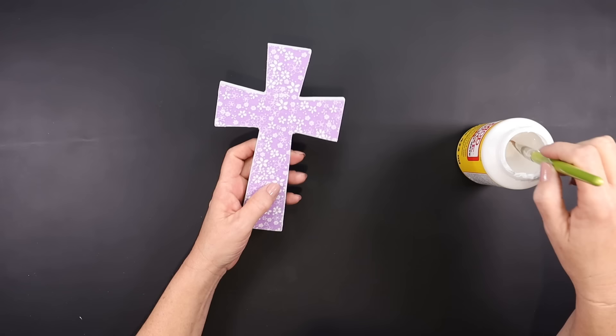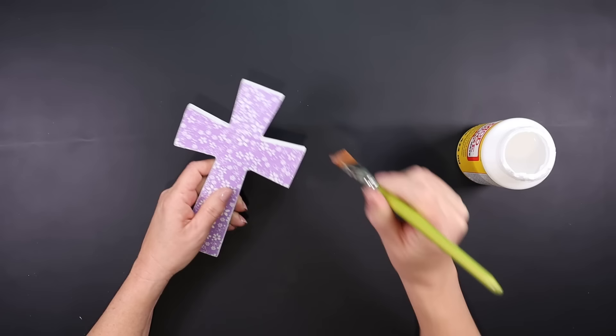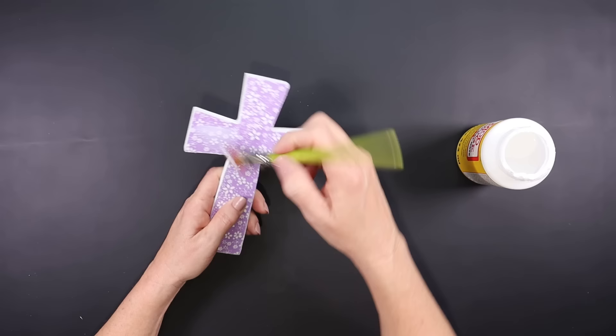To keep the fabric from fraying any further, I'm going to add a layer of Mod Podge to the top and allow it to dry. Then we can embellish it.